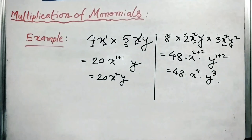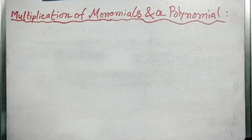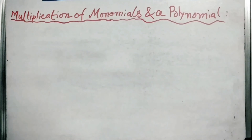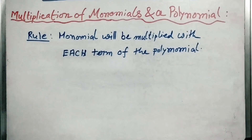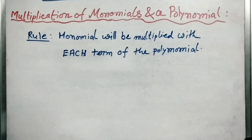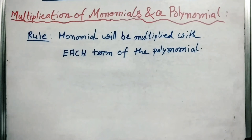Next we will go to multiplication of a monomial and a polynomial. Here we have to follow a simple rule: the monomial will be multiplied with each term of the polynomial.